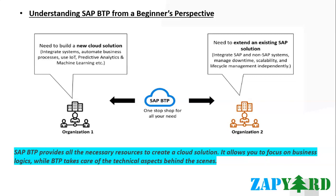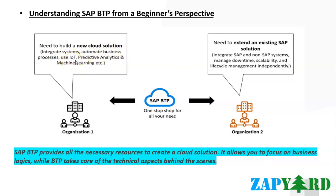Similarly, SAP BTP helps organizations build world-class solutions by focusing only on their core business. Now, if you look at two such scenarios: in scenario one, there is an organization — whether an existing SAP customer or new to the SAP ecosystem — that wants to build a new cloud solution or a mobile solution. In this solution, they want to integrate multiple systems, automate their business processes, use artificial intelligence, IoT, predictive analytics, and machine learning.